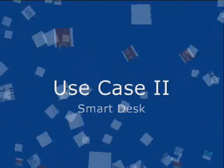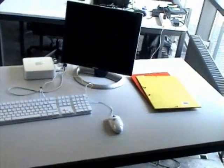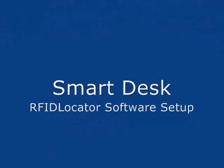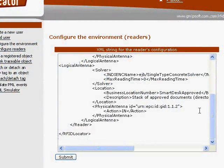Our second example is about creating a smart desk. For this use case, the following setup is needed: a desk with two stacks of documents, under which an RFID antenna is hidden. Again, we have to expose this concrete setup to our application. This is done by using an XML file describing the reader's configuration within the environment.